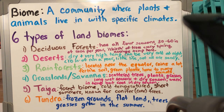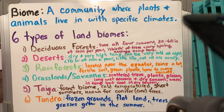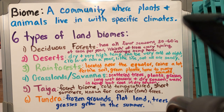Last week you read a little bit of information about the deciduous forest. And this week in science you're reading about the leftover five. I figured I would tell you a little bit about each one, some information, and show you exactly what each type of biome looks like. The definition of a biome is basically a community of where plants and animals live. Each biome has a specific type of climate and specific characteristics that make it different from one another.